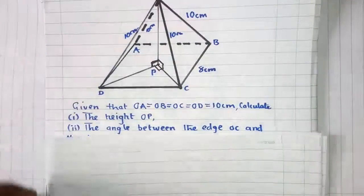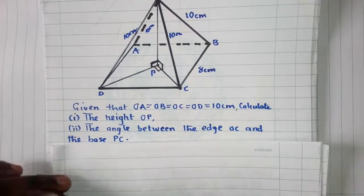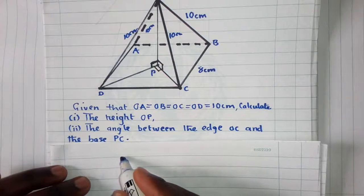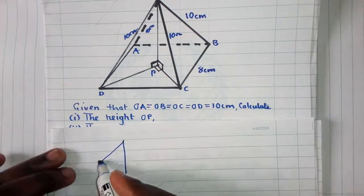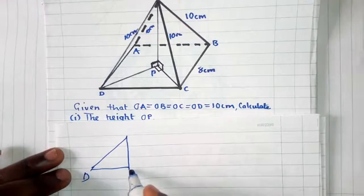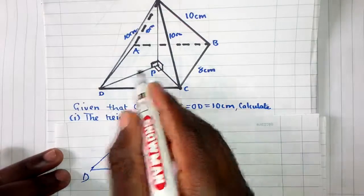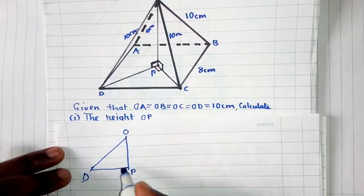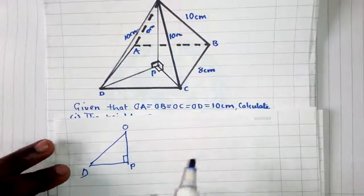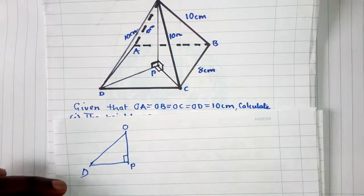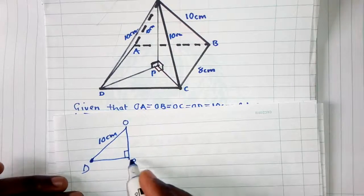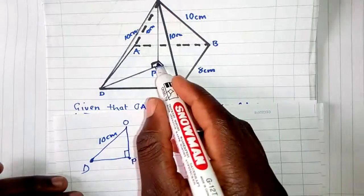Here is the procedure. I want you to see what I'll do. This is my D, this is my P, and this is my O — and this is 90 degrees. You can see it's forming a right-angled triangle. This side we know is 10 centimeters, but from D to P we don't know, so we need to find that side.